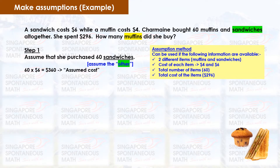Step 1: When asked to find the number of muffins, assume that all relate to the other item — which means sandwiches. 60 sandwiches at $6 each will cost $360 altogether. $360 is our assumed cost.